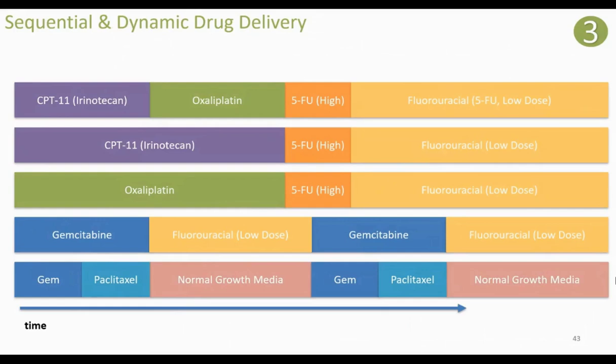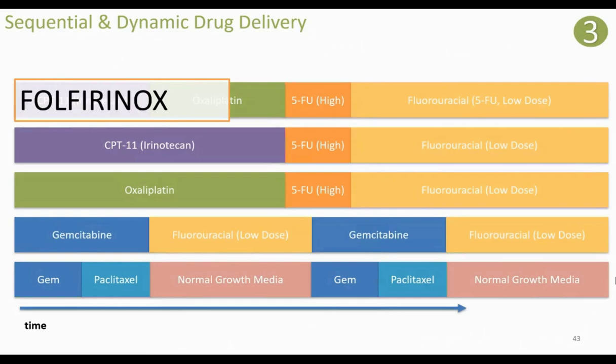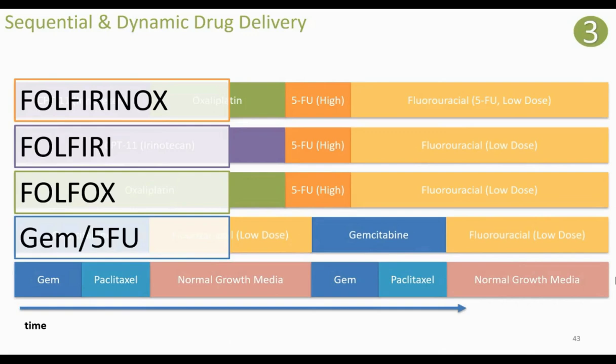The FDA-approved chemotherapy drugs I examined include FOLFIRINOX, gemcitabine and 5-FU, and gemcitabine and paclitaxel. Patients do not receive all drugs at once — instead they get them in a specialized sequential delivery. I wanted to mimic and mirror how patients receive them in real life on my platform. So I looked at how they're actually received clinically and developed timing for FOLFIRINOX, gemcitabine and 5-FU, and gemcitabine and paclitaxel.